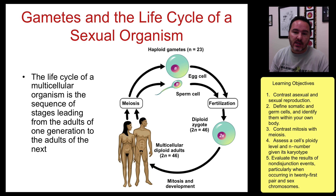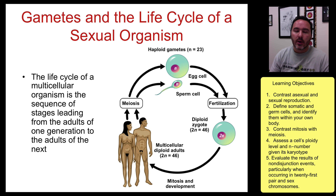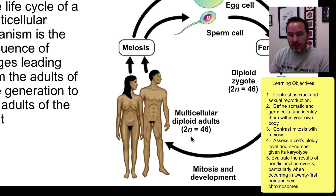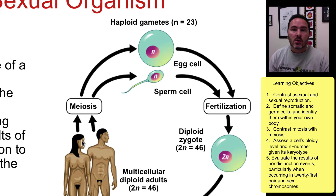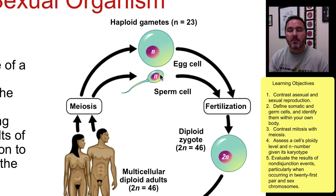Sexual reproduction is different. In sexual reproduction, we produce gametes, and so there's this alternation between haploid and diploid life cells. Looking at humans, we are diploid adults, meaning the cells in our body are diploid. They are composed of pairs of homologous chromosomes. We have 23 pairs, so our N number is 23. 2 times 23 equals 46.